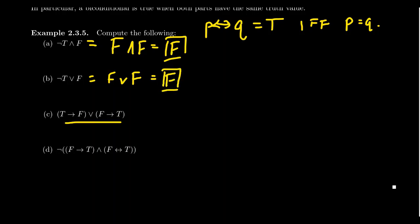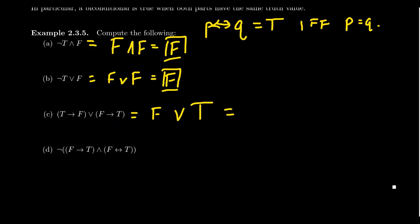Let's do one with conditionals: (true implies false) OR (false implies true). We simplify parentheses first. True implies false is the only case where a conditional is false — premise true, conclusion false — so that gives false. False implies true is a vacuously true statement since the hypothesis is false, so that gives true. We then have false OR true, and since any part of a disjunction being true makes it true, the whole statement is true.